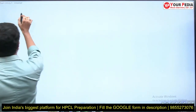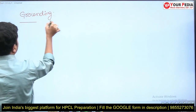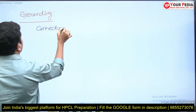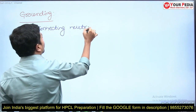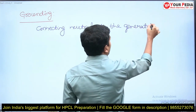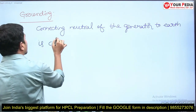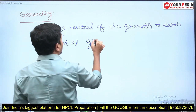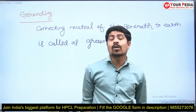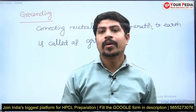So let me write: grounding means connecting the neutral of the generator to earth — this is called grounding or neutral grounding. There are several methods of neutral grounding: resistance grounding, reactance grounding, Peterson coil grounding, and solid grounding. For different applications, different grounding methods are used.